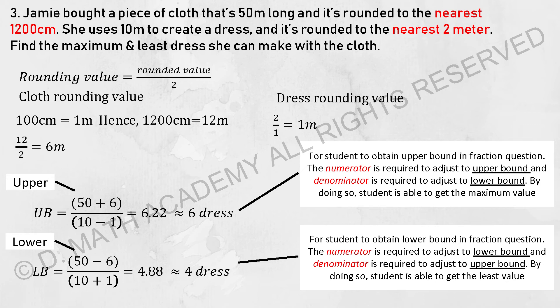For us to find the upper bound first, I took the 50 plus 6 divided by 10 minus 1. The denominator needs to be smaller where the numerator needs to be larger so that you can calculate the highest possible value.